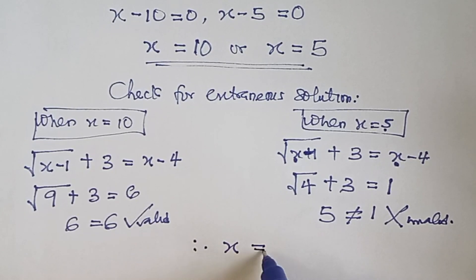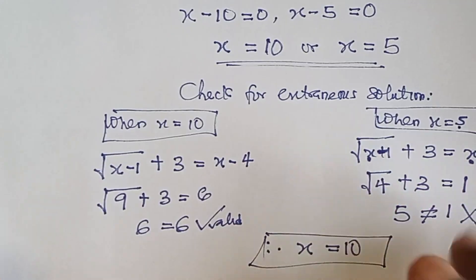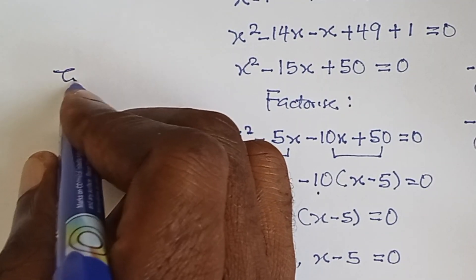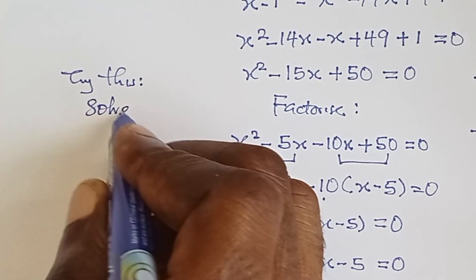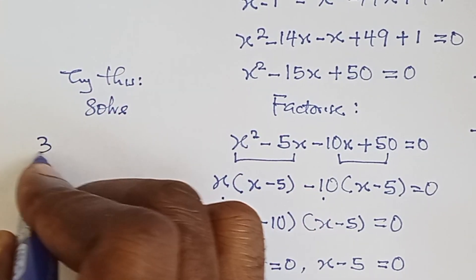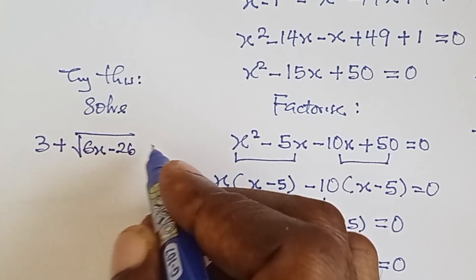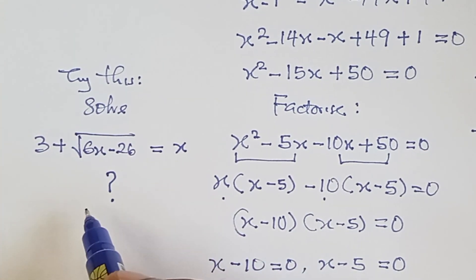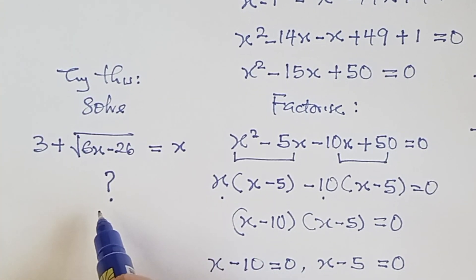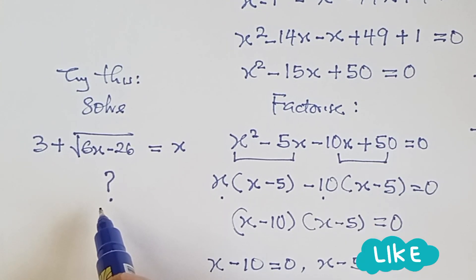Therefore the only valid solution is x equals ten. Now let's try solving a new problem: three plus square root of six x minus twenty-six equals x. Thanks guys for watching — don't forget to like, comment, and if you are not subscribed to this channel please do subscribe. See you next time!